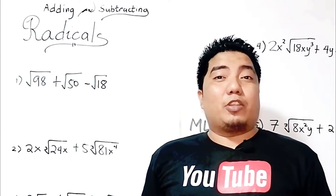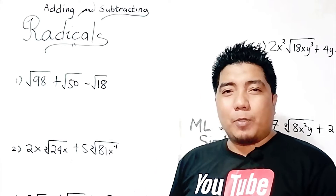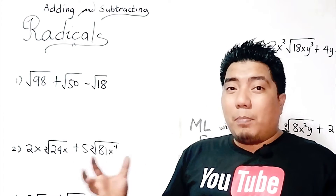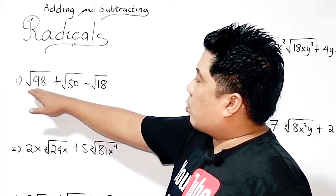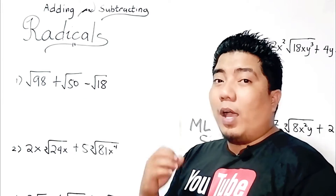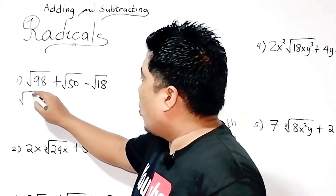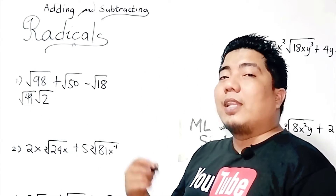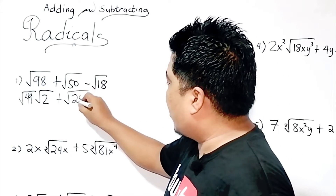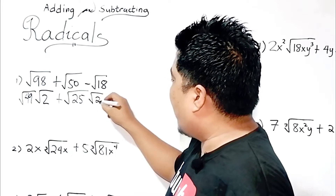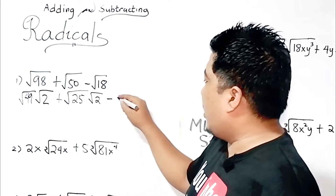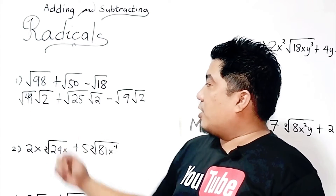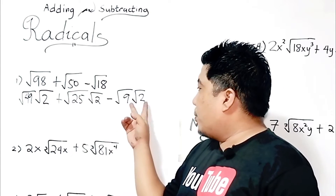As you can see, all of the terms are unlike terms, but each term can be simplified. The first step is to simplify each term before adding. The square root of 98 is not a perfect square, but we can break it down into two factors where one is a perfect square: 49 times 2, giving square root of 49 times square root of 2. The square root of 50 breaks down into square root of 25 times square root of 2. And square root of 18 breaks into square root of 9 times square root of 2.